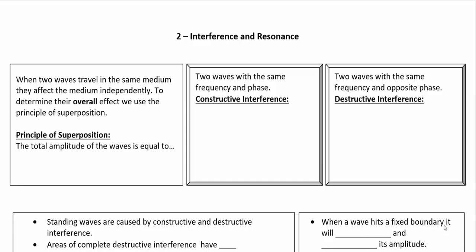So for part one, we're going to look at what happens to two waves when they travel in the same medium. What happens if two waves collide with each other? They follow something called the Principle of Superposition, which says that the total amplitude of waves is equal to the sum of the individual amplitudes.